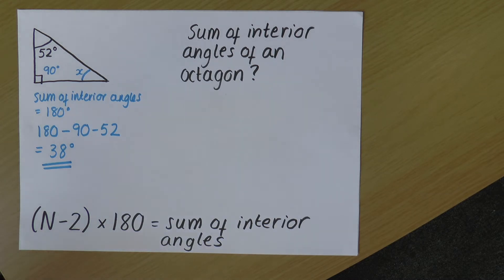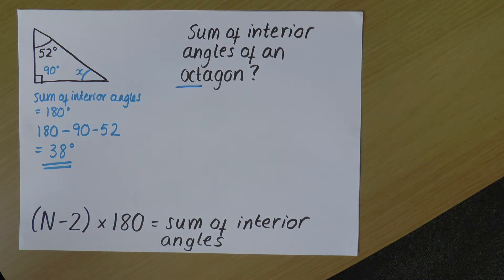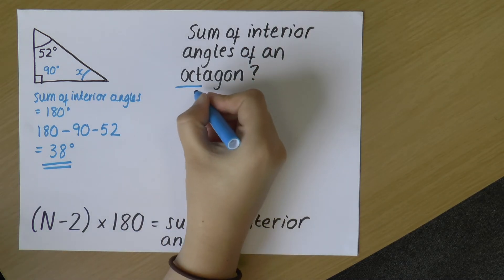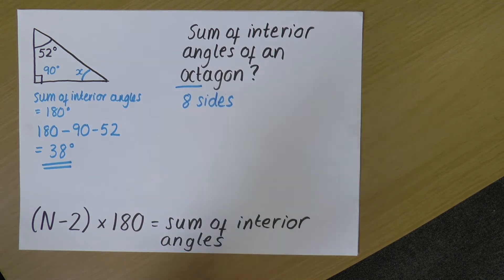Now, sometimes a question will give you a drawn shape and you just have to count the sides. Or for the first few shapes, you need to know how many sides they've got. So the clue in octagon is this word oct, which means eight. You may be familiar with the word octopus, which is a sea creature with eight legs. So honestly, that's how I remember octagon. So an octagon has eight sides. And I'm just going to make a note of that.